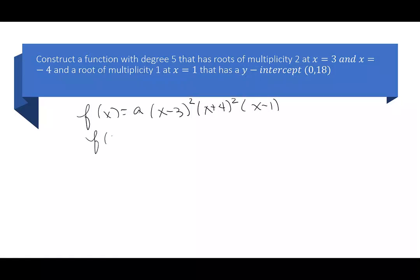If I plug in 0, I have a, (0 minus 3) squared, (0 plus 4) squared, and (0 minus 1), and that's supposed to be 18.